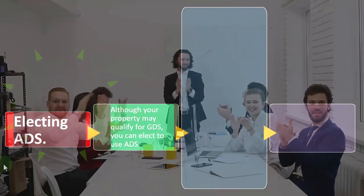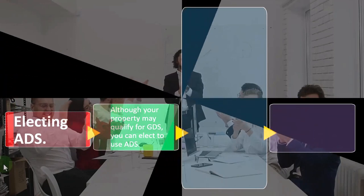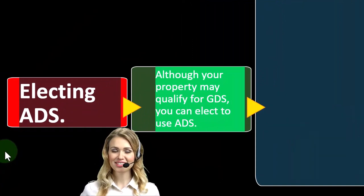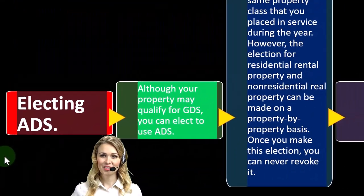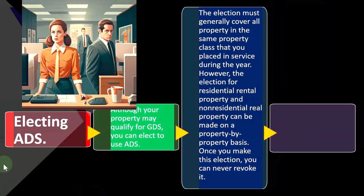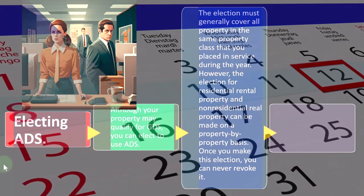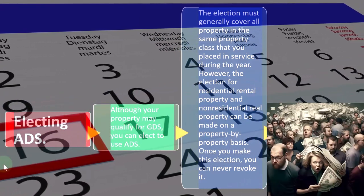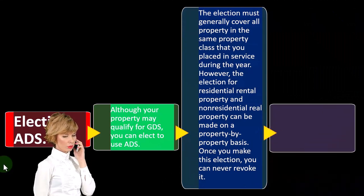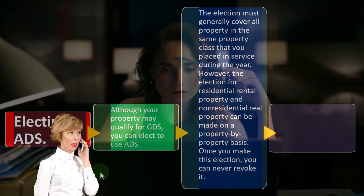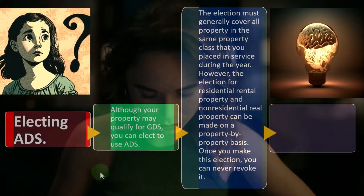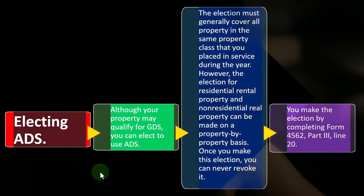Electing ADS. This would be deviating from the general standard to ADS, not because you're required to, but because you're electing to do so. Although your property may qualify for GDS, you can elect to use ADS. The election must generally cover all property in the same property class placed in service during the year — you have to be somewhat uniform within that year. However, the election for residential rental property and non-residential real property can be made on a property-by-property basis. Once you make this election, you can never revoke it, which makes sense since you're depreciating something over its useful life and can't deviate from the method once you've started. So make sure you make any elections you want in the first year.